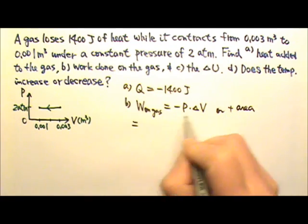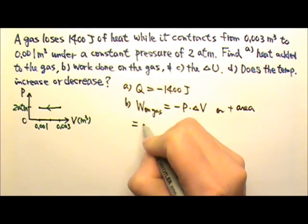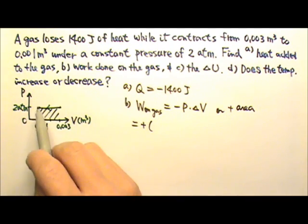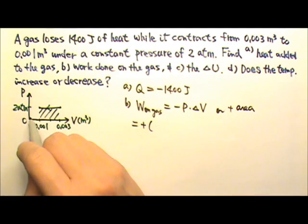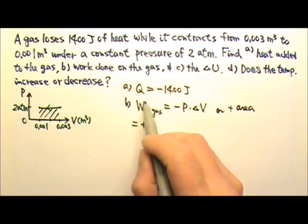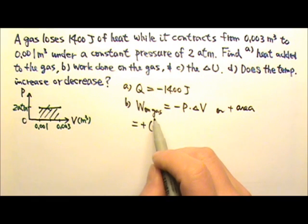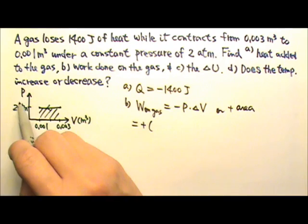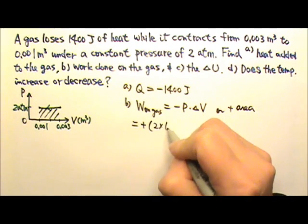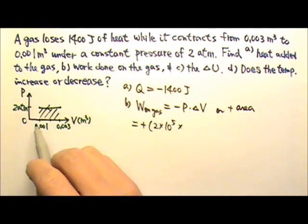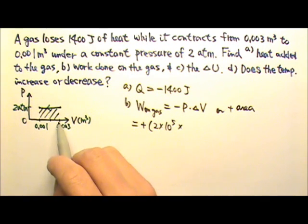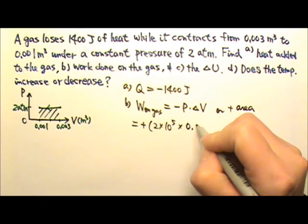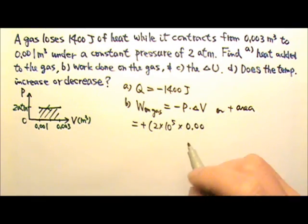So I'm just going to use the positive area. And the area under the graph here is a rectangle. And it has a height of 2 atmospheres. But if I want my work to be in joules, the standard unit, I need to use the standard unit for the height, which will be 2 times 10 to the fifth Pascals. The base of the rectangle is the difference in the volume, so the change in volume here, that is 0.002.